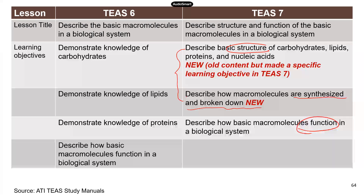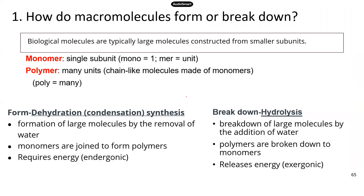First, we're going to look at how molecules are synthesized and broken down. There are two very important terms: monomer and polymer. Mono means one, mer means unit — so a monomer refers to a single subunit for a particular large biological molecule. For instance, the monomer for proteins is amino acid, and the monomer for starch is glucose.